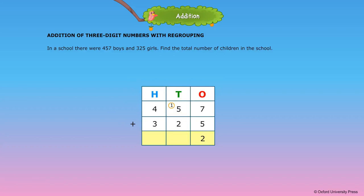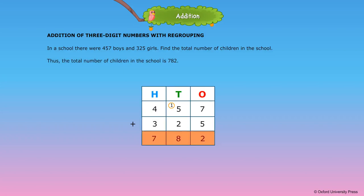Then add the digits in the tens place. 5 tens plus 2 tens is equal to 7 tens. 7 tens plus 1 ten carried over is equal to 8 tens. Now add the digits in the hundreds place. 4 hundreds plus 3 hundreds is equal to 7 hundreds. Thus, the total number of children in the school is 782.